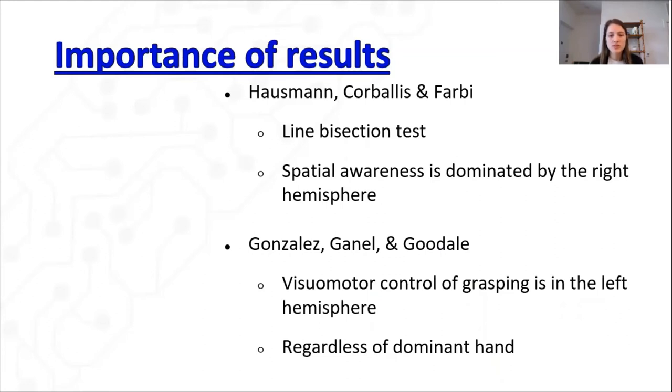A group of psychologists was interested in finding out what hemisphere was important for spatial awareness, so they conducted a line bisection test and found out that spatial awareness is dominated by your right hemisphere. Another group of researchers was interested in what hemisphere is responsible for visuomotor controlled grasping, regardless if you're right or left handed, and they found out that visuomotor controlled grasping is in the left hemisphere, regardless of dominant handedness.